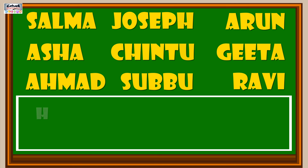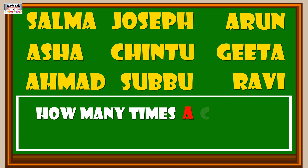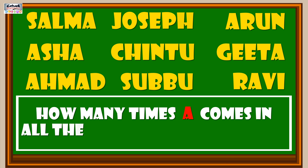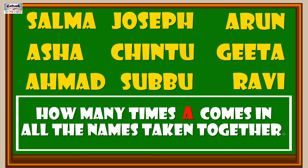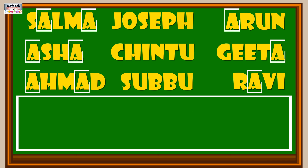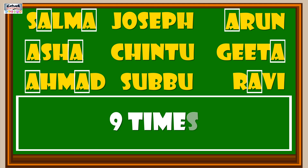How many times does the letter A appear in all the names taken together? 9 times.